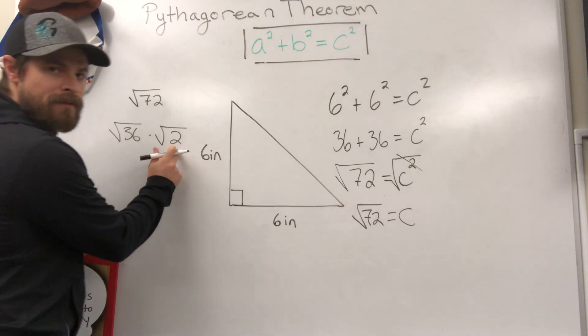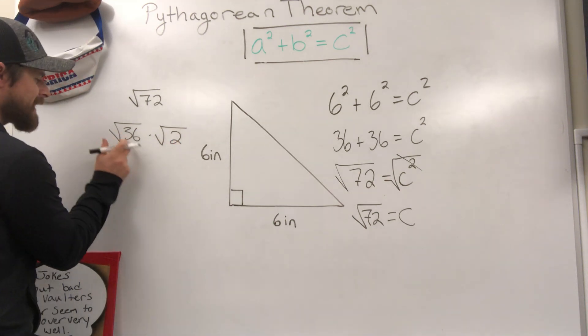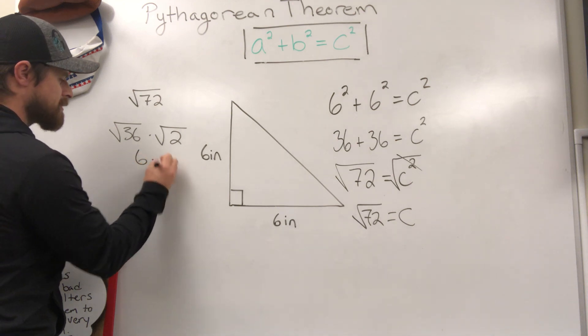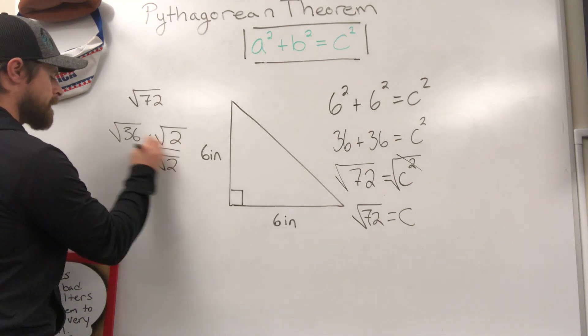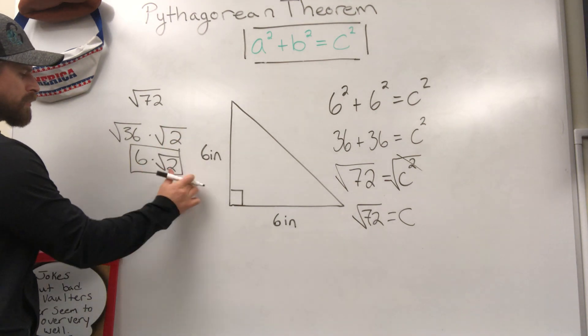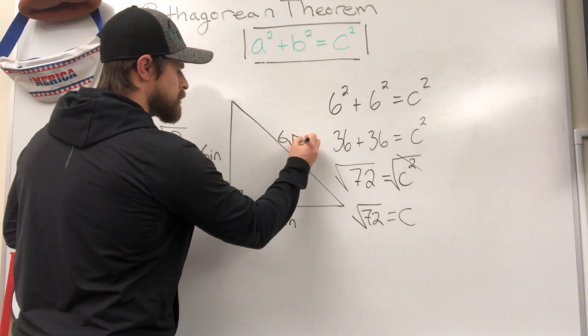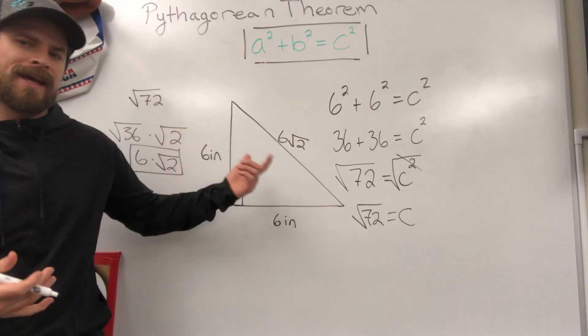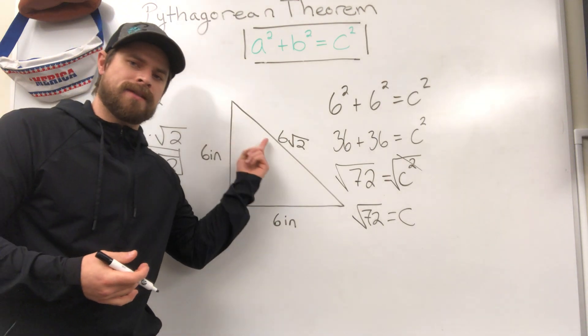I can't simplify the square root of 2. It's not a perfect square, but I can simplify the square root of 36. 6 times the square root of 2. Okay? So 6 root 2 is how that would be said. 6 root 2 would be the value of the hypotenuse and the exact measurement of this missing side.